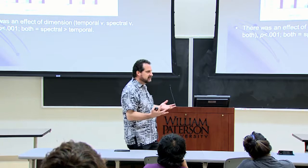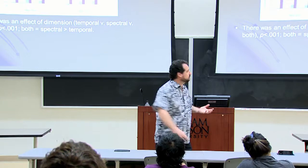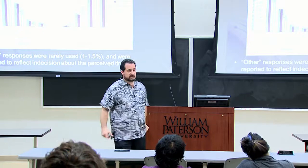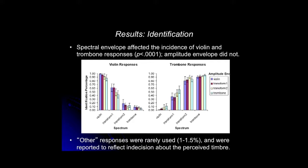And for identification: when we asked listeners to identify the instruments, again they follow what's happening in the spectrum — frequency information — not so much what's happening in the amplitude information. The amplitude information is shown in the legend as different colored bars. For any one point along the spectral dimension, the bar heights are just about the same. At the violin end there's variability, but there's really no statistically significant change coming from the amplitude information. Same on the trombone end. So what are they using? They're using formant structure — where the energy is across the spectrum.